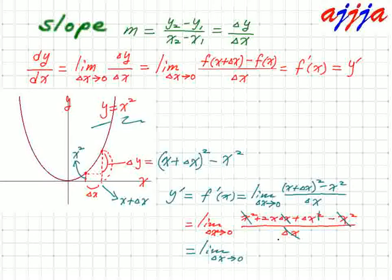Limit delta x going to be zero. Then 2x, look at this one. 2x plus delta x. So it says delta x is going to be zero. Then if this is going to be zero, then what? Left over is 2x. This is it. 2x.